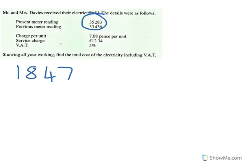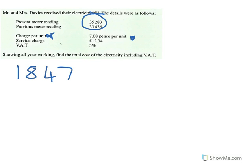So these are the units that have been used in the last quarter or month, whatever the question is about. The next part of the question tells you the charge per unit — the charge for each unit that Mr. and Mrs. Davis used — which was just a little bit more than 7 pence.